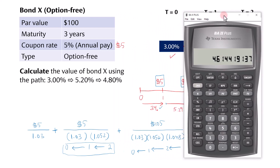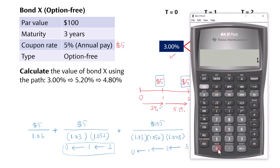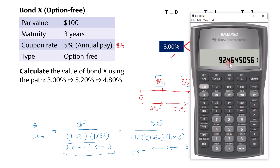For the last cash flow, type 1.03 × 1.052 × 1.048 as the denominator, press 1/x, then multiply by 105 to get the PV of the final cash flow. You can press Store 3, or simply add it directly: press plus, Recall 2, plus, Recall 1. You will get the bond value under the Pathwise Valuation Method, which is 101.93.